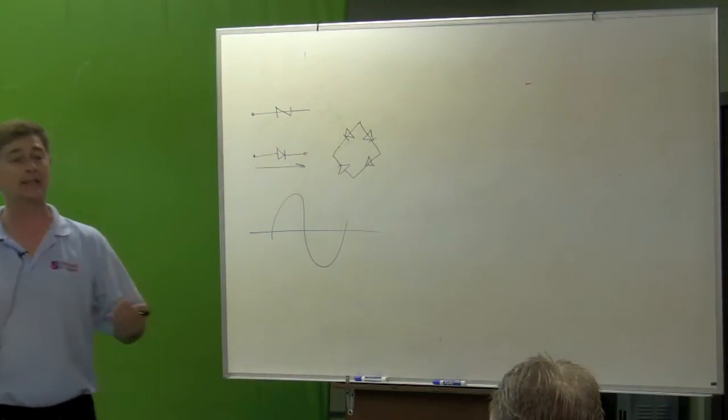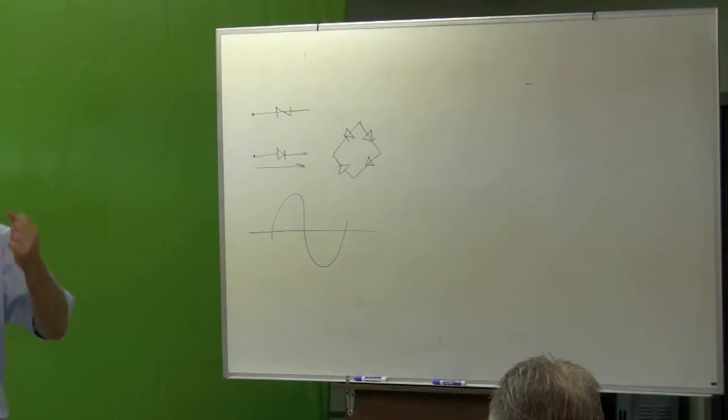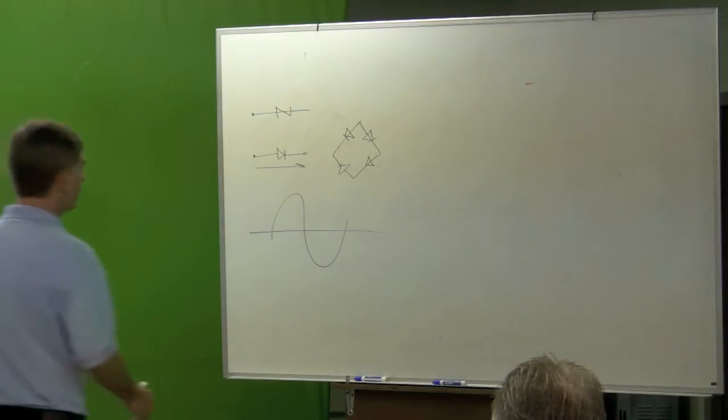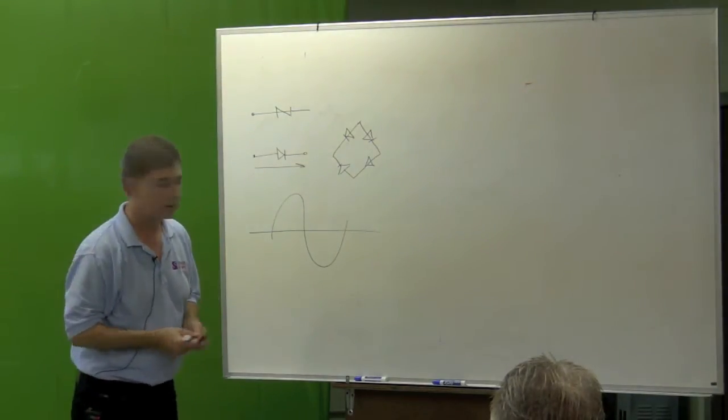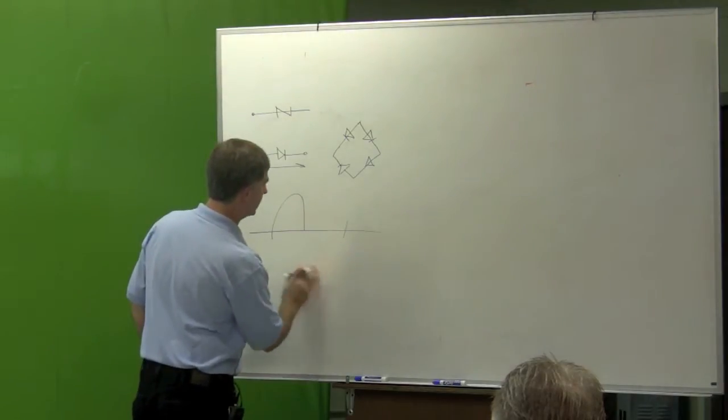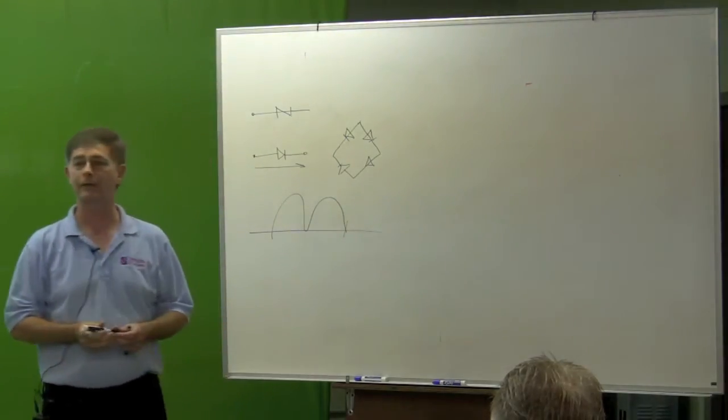Part of the time in the AC current, you've got positive voltage. Part of the time, you have negative voltage. Alright, we run it through some diodes, and all of a sudden, you take and convert it to this.